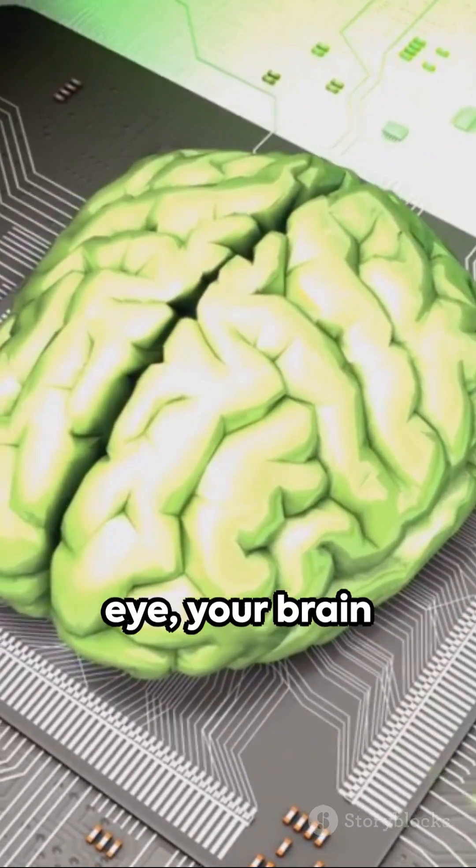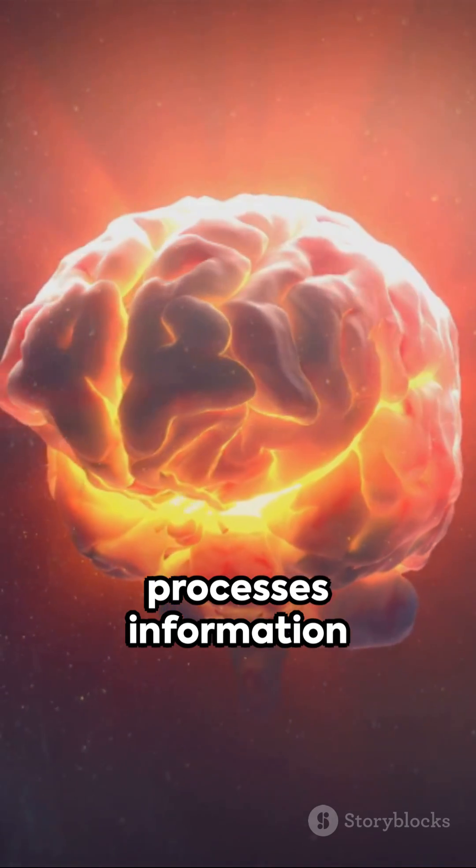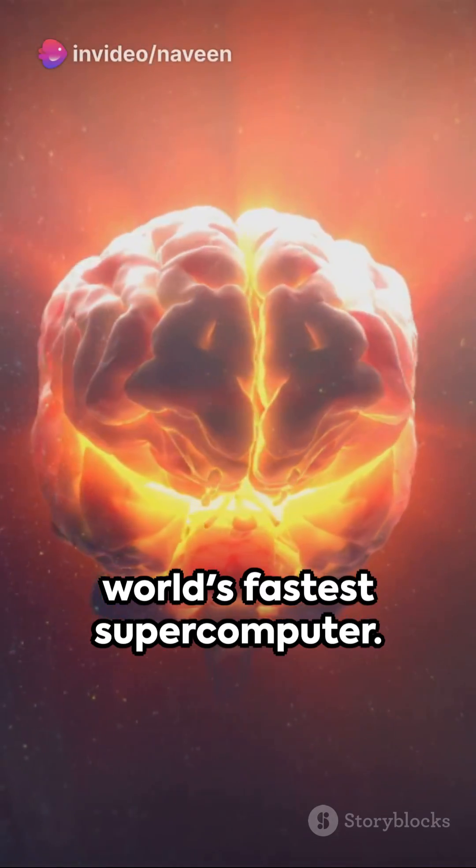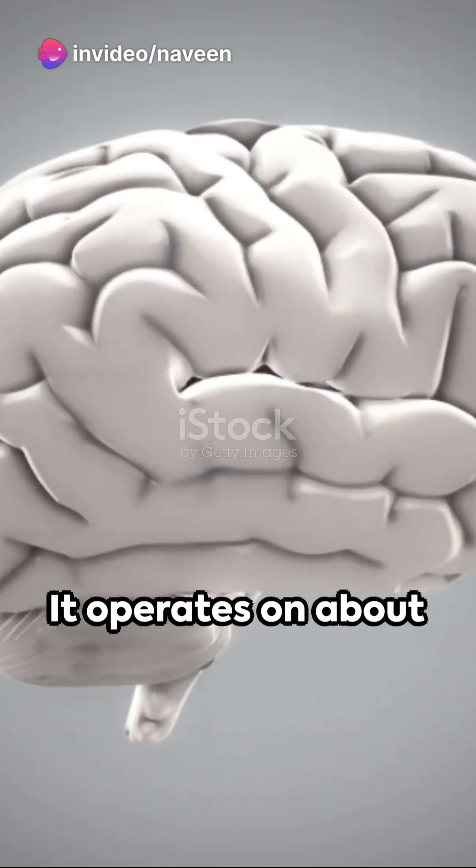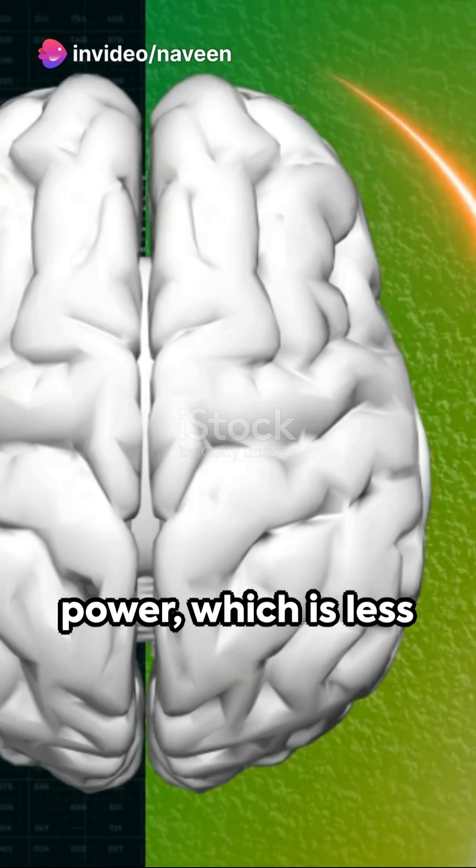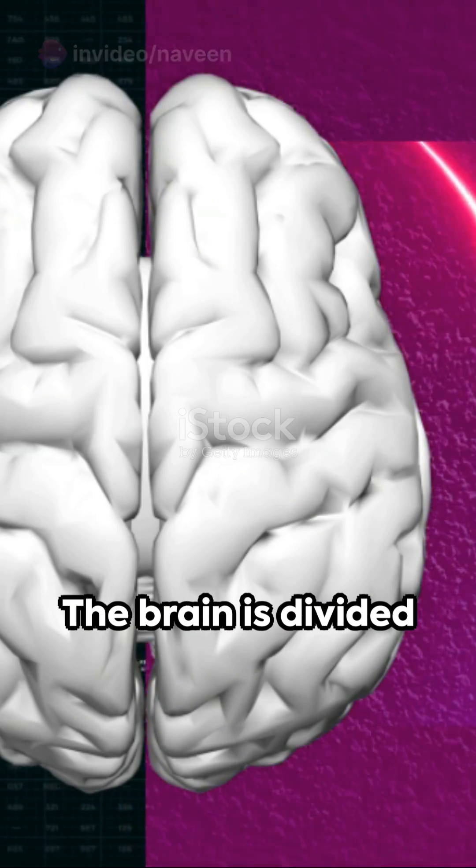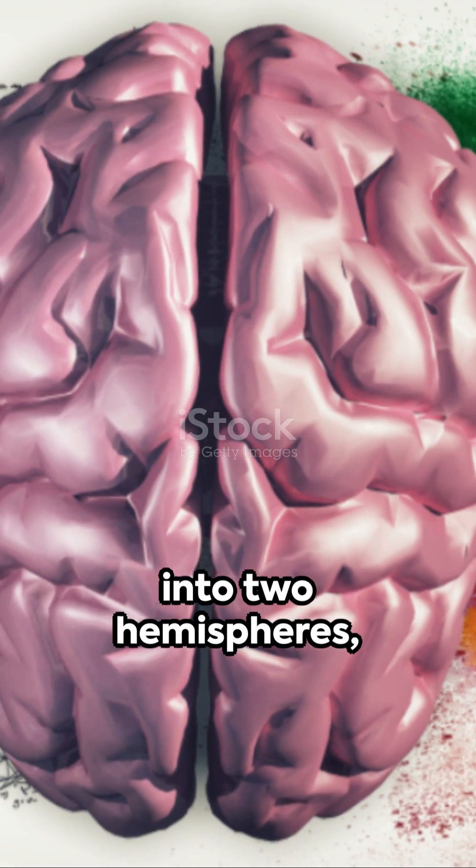In the blink of an eye, your brain processes information faster than the world's fastest supercomputer. It operates on about 20 watts of power, which is less than a dim light bulb. The brain is divided into two hemispheres.